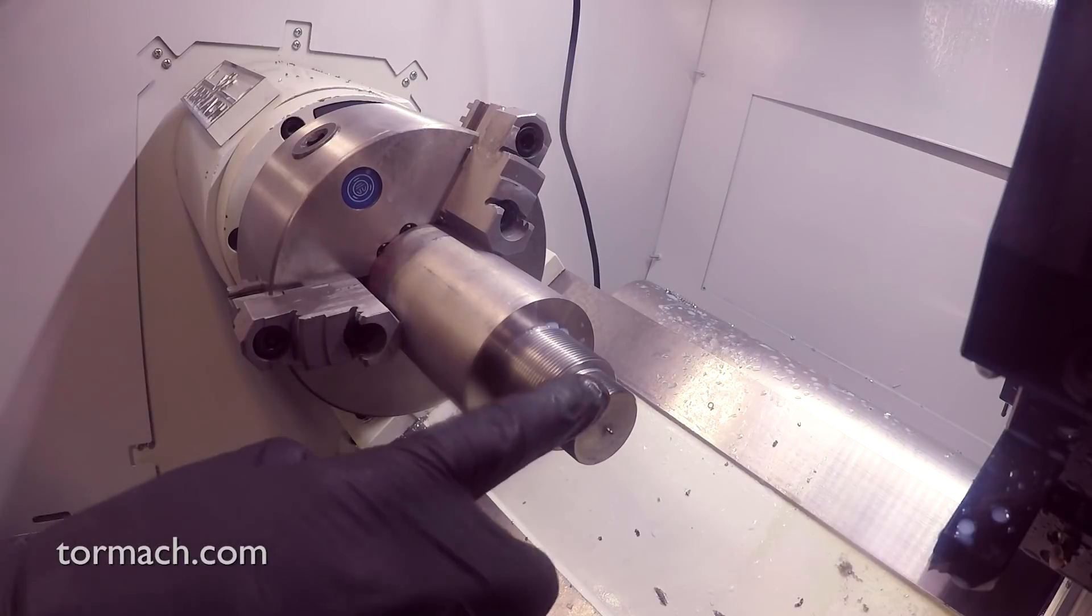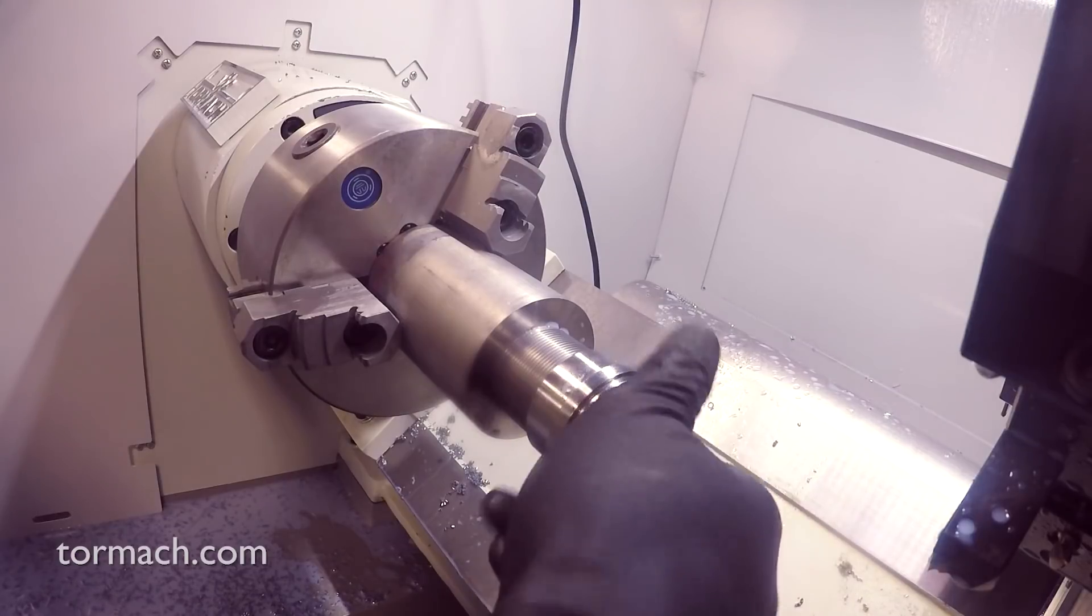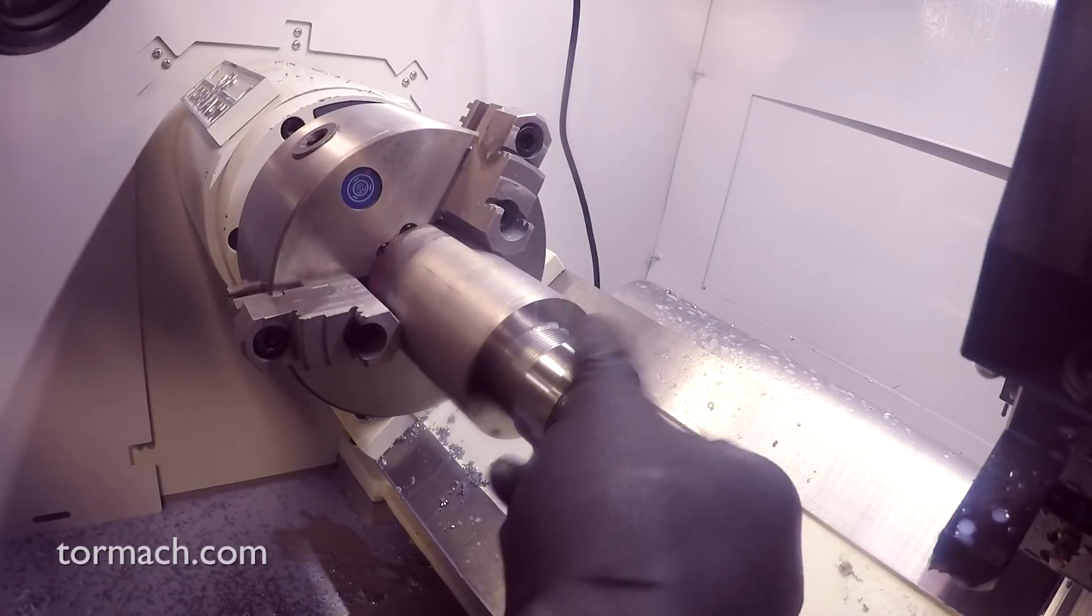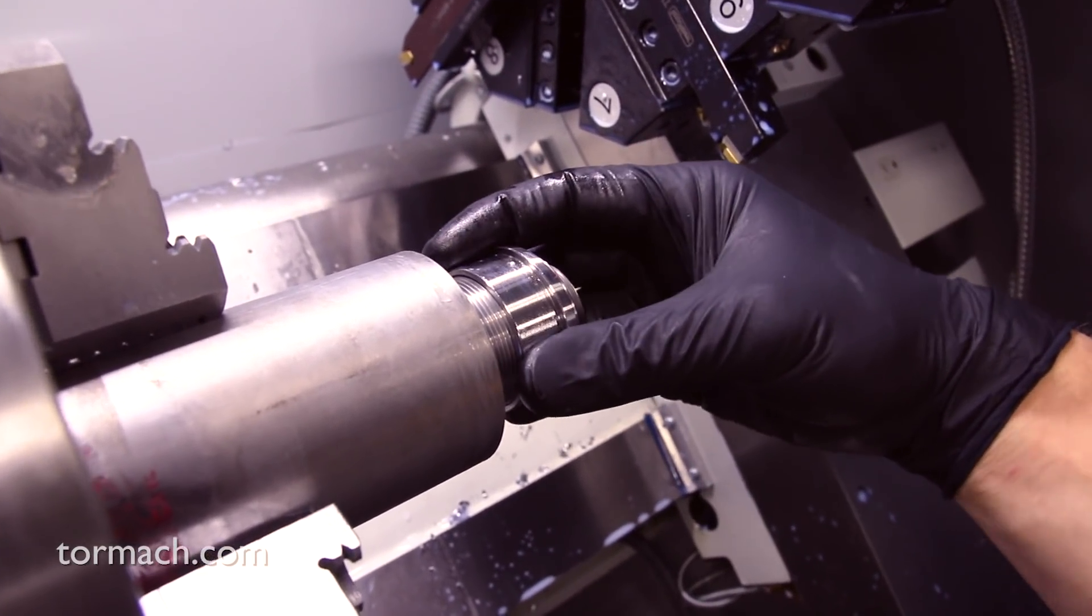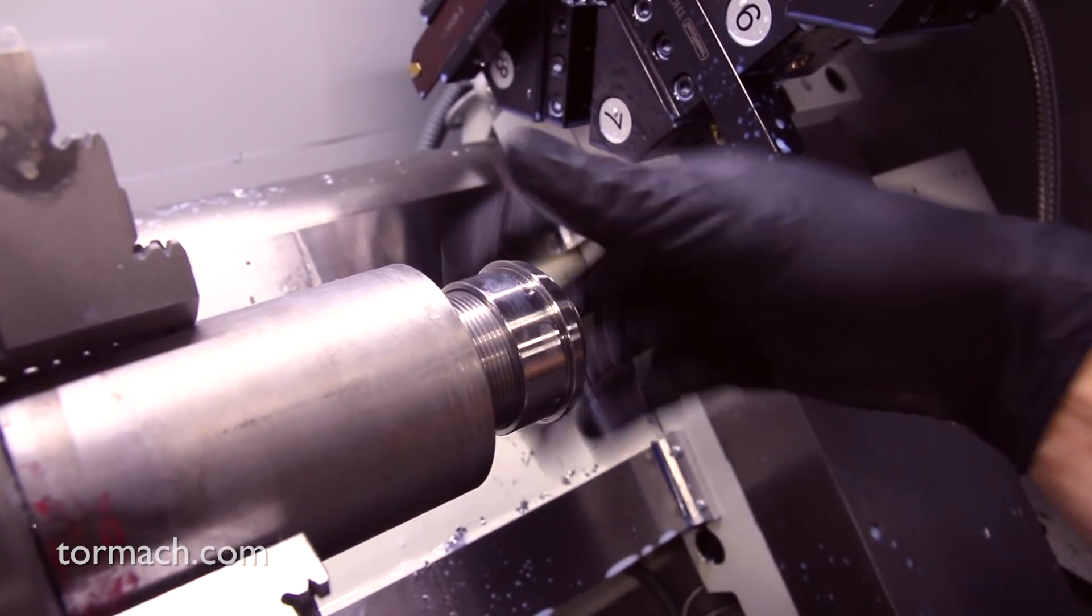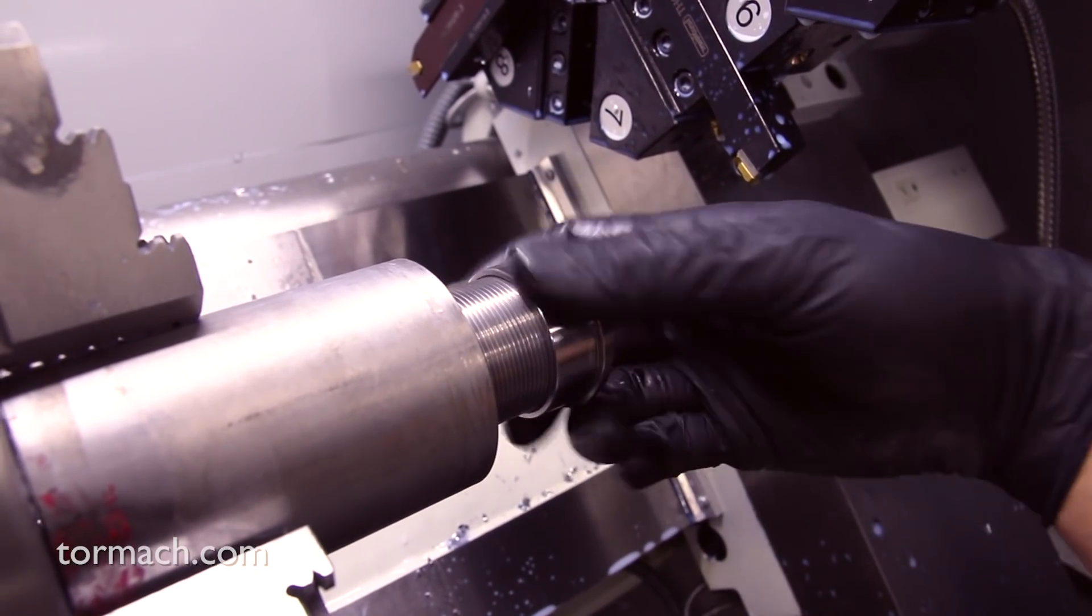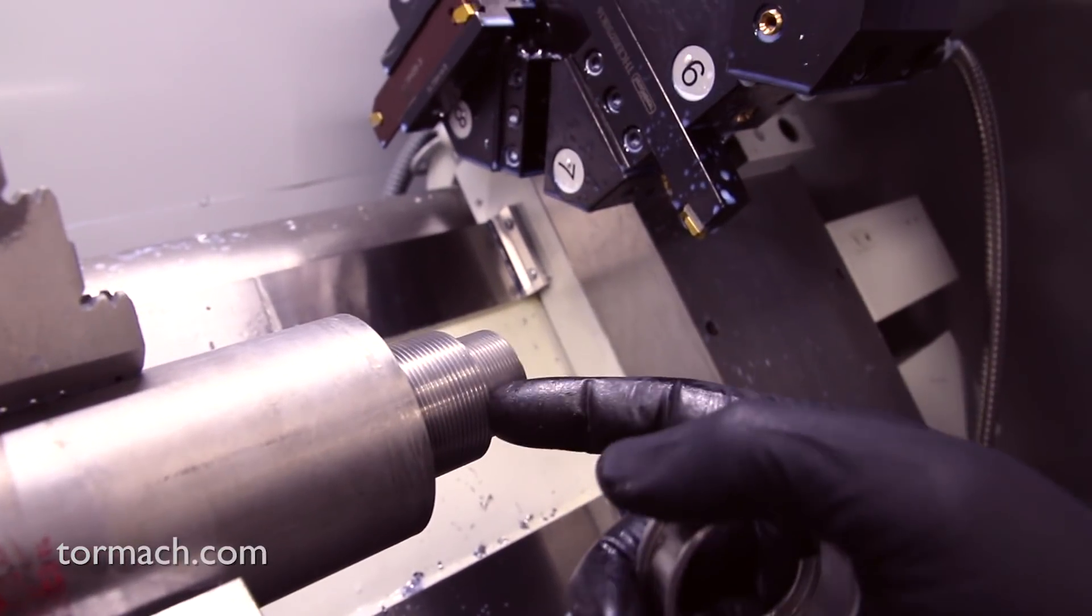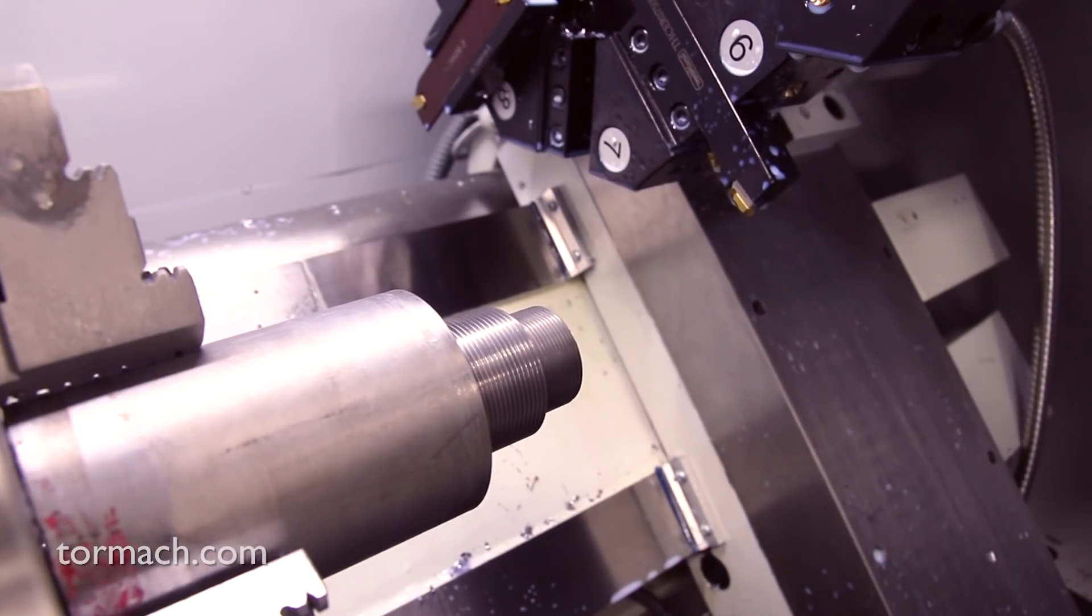As you can see, we've got a couple different diameter threads, so we're just working through this, checking the thread as we go, just to fit it up to the components that we have. We've got a pretty nice fit on this. This is an M40 by 1.5 thread, so we've got barely any play in that at all. I'm pretty happy with that. All we've got to do now is drill and bore a hole, drill a hole and bore it a little oversize, then put some thread reliefs on this and part it off.